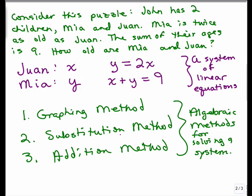But I'm going to go ahead and solve this particular problem all three ways, just so you get the idea about the three different methods. So we're going to take just the system, not the word problem anymore: Y equals 2X, and X plus Y equals 9. That's a system.